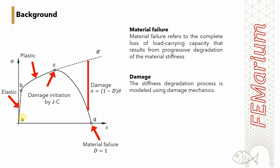Let's have a look at this curve. Here is the elastic behavior, then we have plastic with strain hardening, up to point C, which is characterized by the Johnson-Cook criterion and is called the fracture initiation point. Up to this point, the damage is 0. When the material approaches this point, the damage will evolve from 0 to 1 based on a damage evolution rule which we define in ABAQUS. If we do not include damage, the material will follow this dashed line, but in reality, stress will be reduced based on this formula. This evolution will continue until material failure occurs.